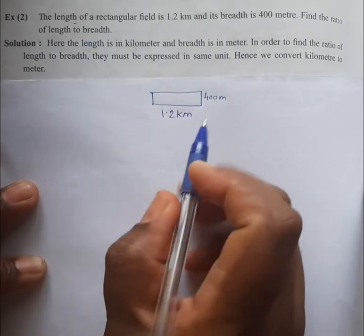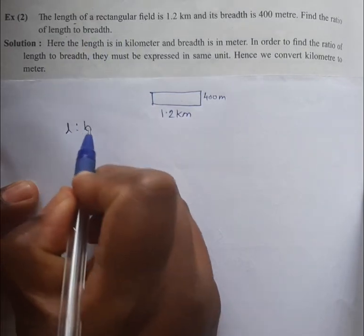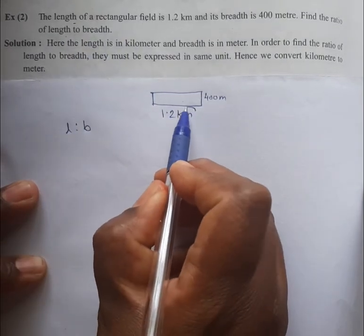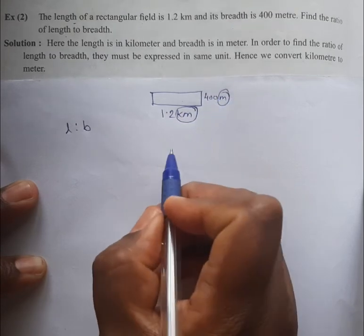What we have to find is the ratio of length to breadth, means L is to B. Now here you can see the units—this is kilometer and this is meter. What we have to do first is convert this kilometer into meter.